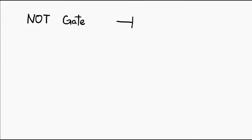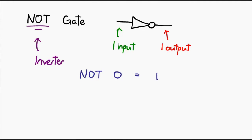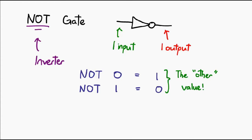Now, in a logic diagram, we actually draw out a NOT gate to look like this. It takes one input and produces one output. And as its name implies, it's extremely simple — it is basically just an inverter. What this means is if it gets 0 as an input, it produces 1 as the output. If it gets 1 as the input, it produces 0 as the output. So whatever you get for input, you just have to invert it, and that is the output.